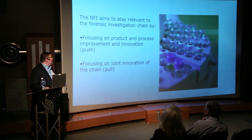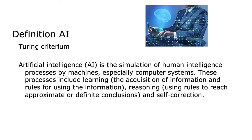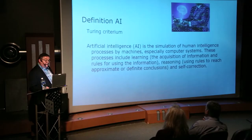We have around 100 people on digital evidence and 15 data scientists working on artificial intelligence for forensic science. A definition of AI is the simulation of human intelligence processes by machines, especially computer systems. These include learning, the acquisition of information and rules, reasoning, and self-correction — that's the Turing criterion, developed by Alan Turing, who did cryptanalysis for the UK in World War II.